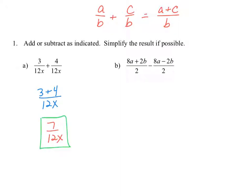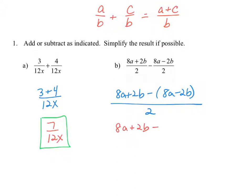In part B, we have two fractions with the same denominator and we're subtracting. So let's take 8a plus 2b and subtract the entire numerator 8a minus 2b. That goes in the numerator, and our common denominator of 2 goes in the denominator. Let's simplify the numerator by distributing the negative sign to get minus 8a plus 2b all over 2. Now we can simplify the numerator by combining like terms.